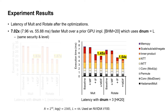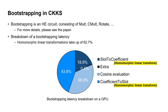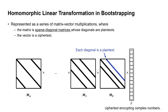Then, what about inter-HE operation fusions? We applied inter-HE operation fusion in bootstrapping. Bootstrapping itself is an HE circuit made up of many HE operations. We show the breakdown of a single bootstrapping latency on a GPU. Most of the time is consumed by functions called slot-to-coefficient and coefficient-to-slot, which are homomorphic linear transformations taking up around 60% of the time. The linear transformation in bootstrapping is represented as matrix-vector multiplications, where the vector operand is a ciphertext whose message is a vector of complex numbers, and each matrix operand is a sparse diagonal matrix where each diagonal is a plaintext.